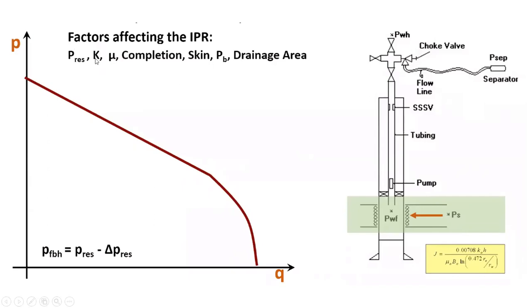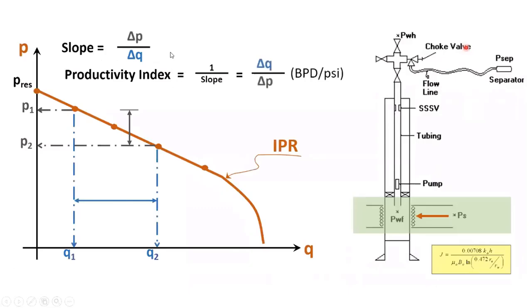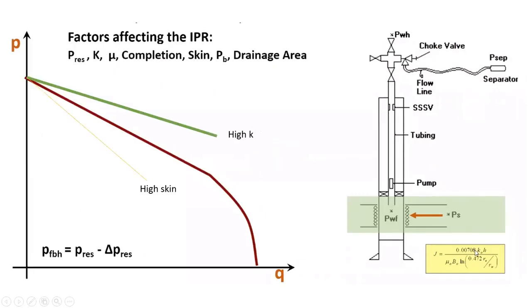For permeability, from the productivity index relationship, PI is directly proportional to permeability. If permeability increases, productivity index also increases. If PI increases, the slope of the IPR decreases, and it decreases by moving upward. So if permeability increases, PI increases; if PI increases, the slope decreases; and that decrease is obtained by the IPR shifting upward. For skin, the skin is inversely proportional to the productivity index — we have a skin component in the equation.